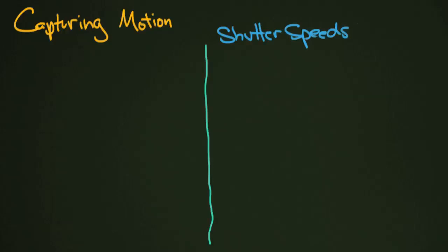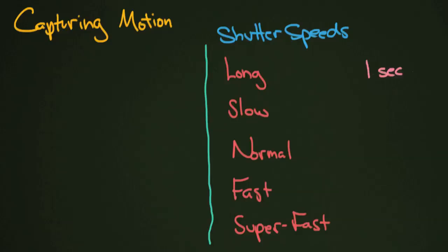I basically divide when I'm talking about shutter speeds into what I would call long shutter speeds, slow shutter speeds, then there would be normal shutter speeds, fast, and then super fast. A long shutter speed is going to be about one second or longer, up to 30 seconds plus. So you're going to have here when you're talking about a shutter speed of one second, that's quite a long time. A lot can happen in one second when you're taking a photograph.